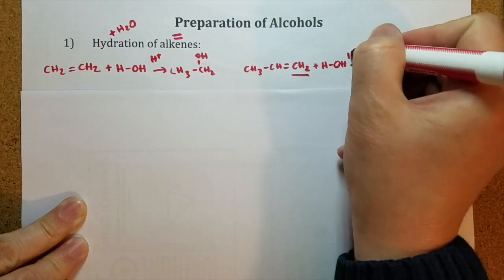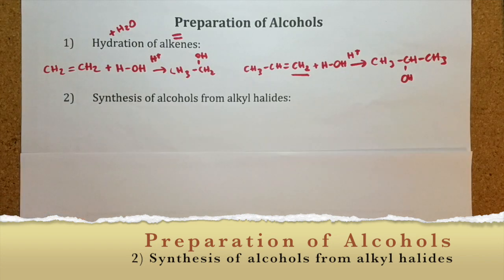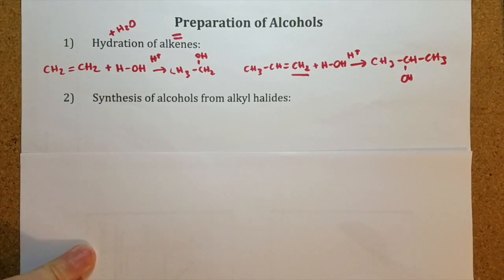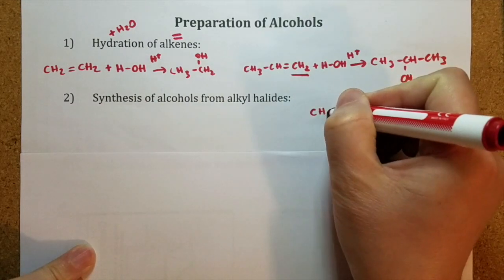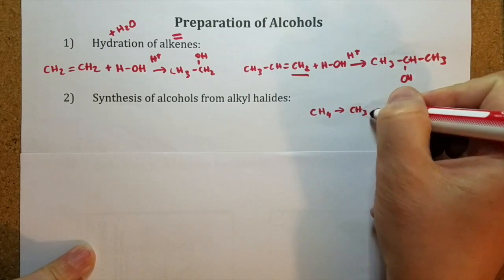The second method is synthesis of alcohol from alkyl halides. As you remember, alkyl groups are obtained by taking one hydrogen out from an alkane. This is methane, an alkane. And this is methyl, an alkyl group.